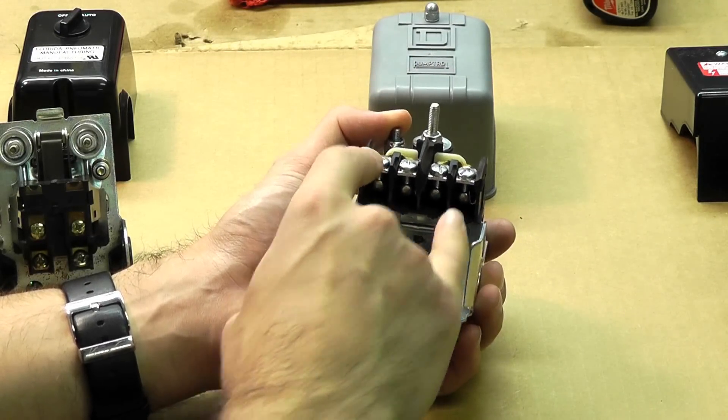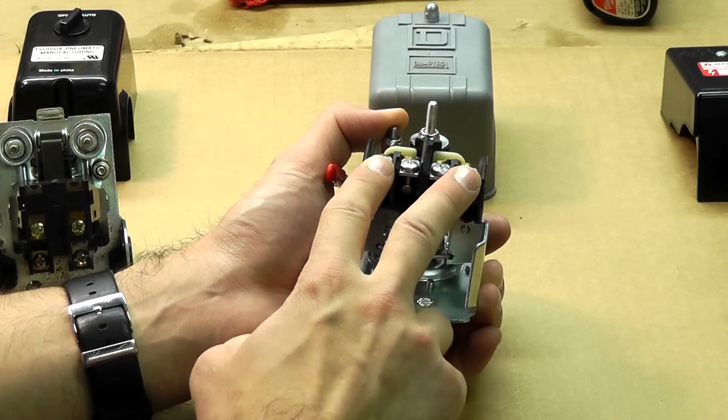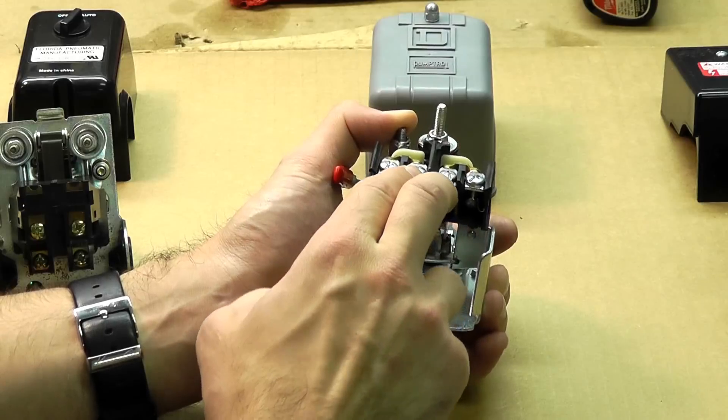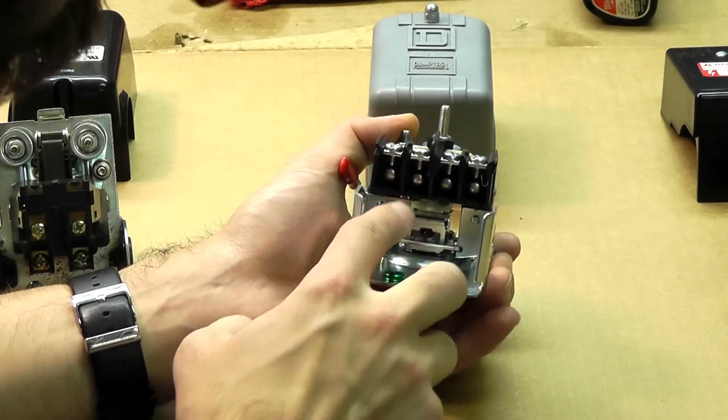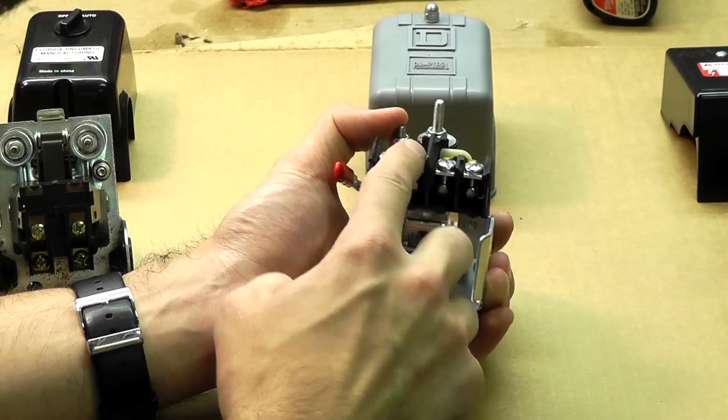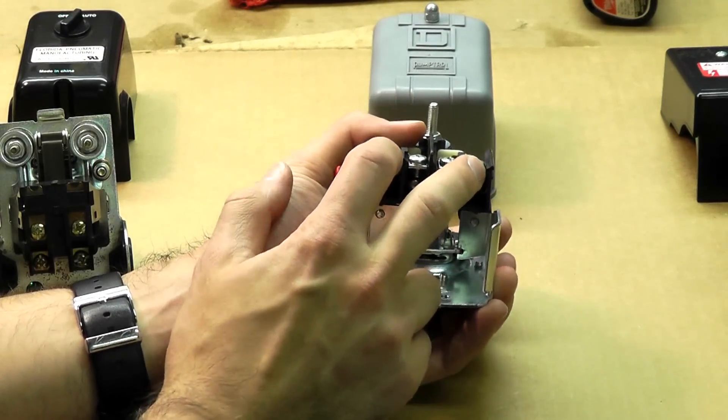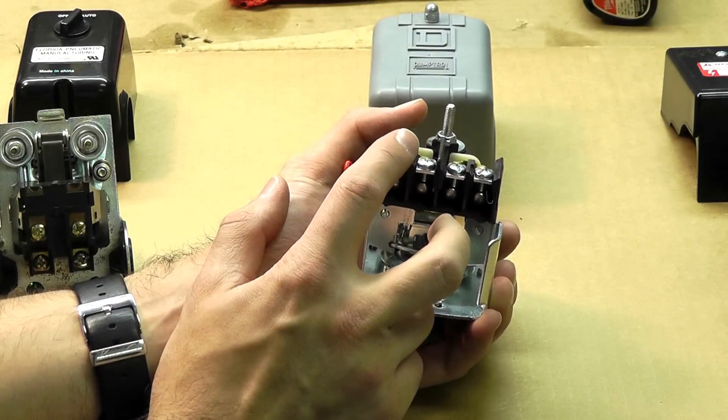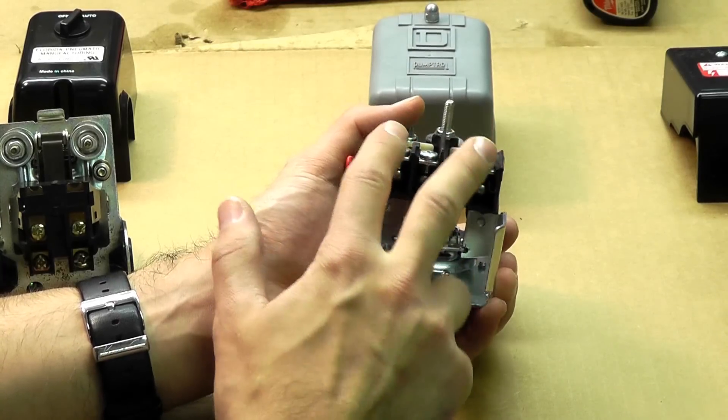So what you'll do is, if it's not labeled line or motor, you want to install your line or power cord wires on the outer contacts, on the outer terminals. Keep them on separate contacts and of course your motor wires on the inner terminals. So then you have power cord on one and three, and your motor on two and four.